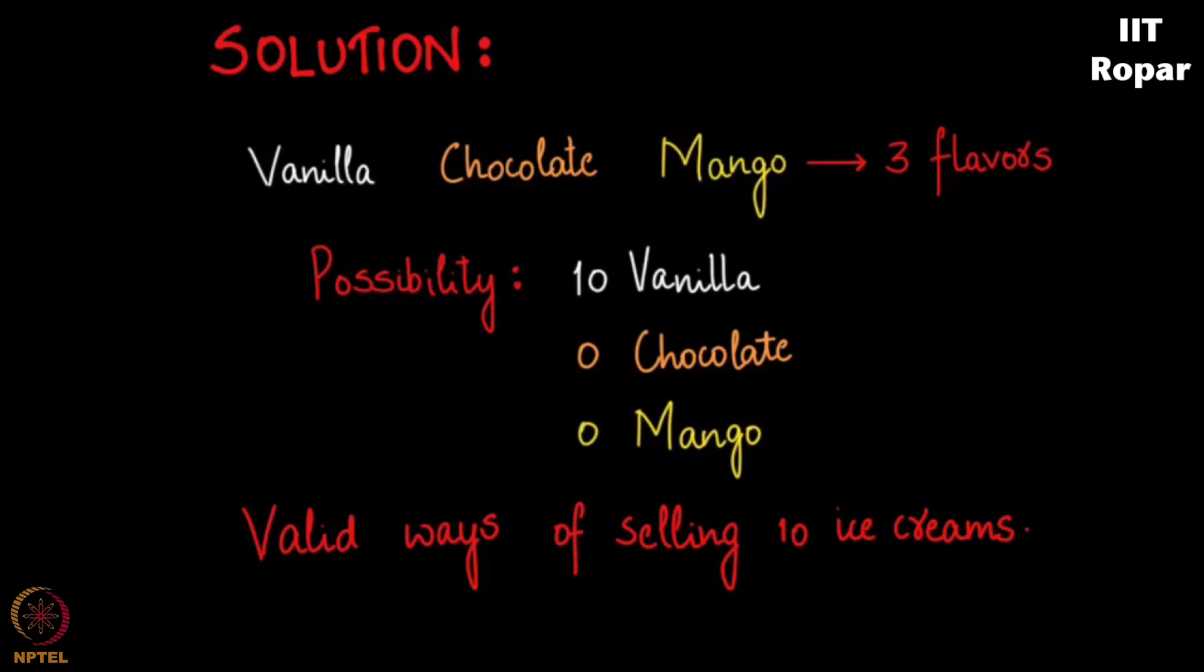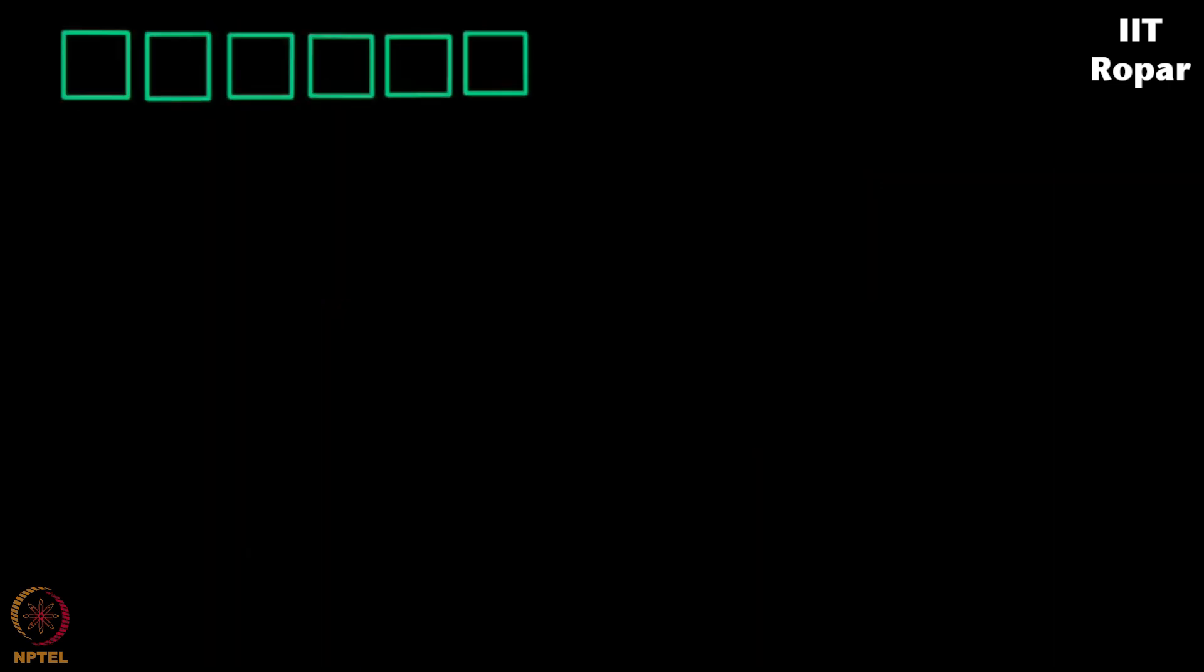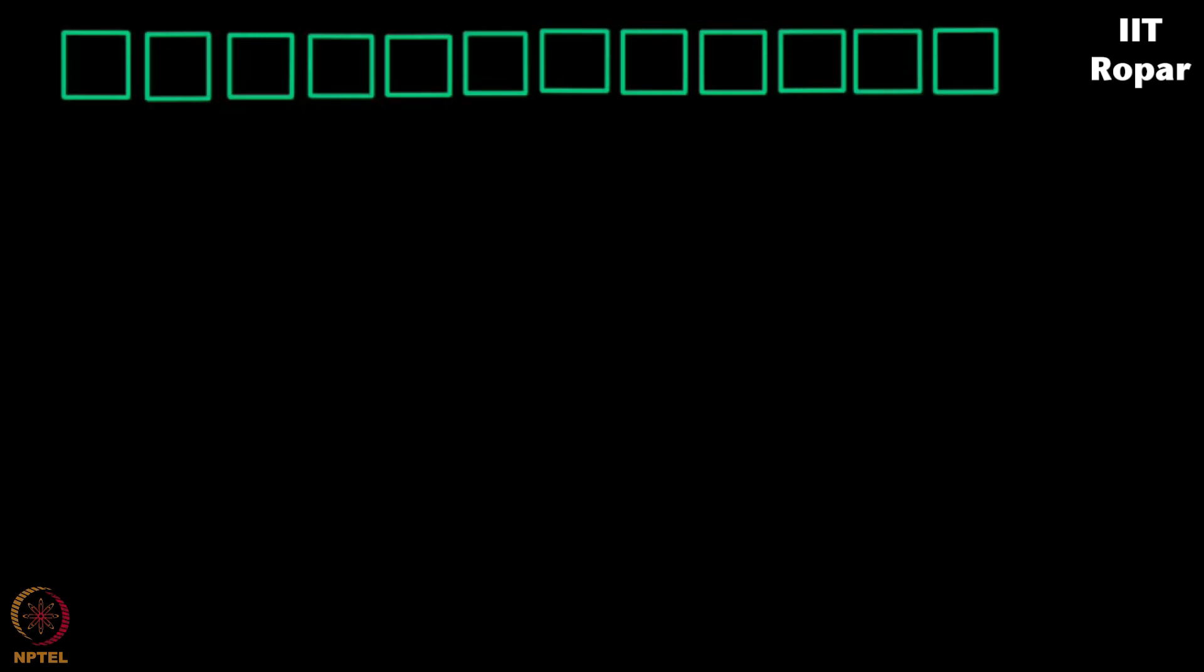Now what I will do is I will visualize this very thing in a particular way that makes my counting easy. What do I do? I will take 1, 2, 3, 4, 5, 6, 7, 8, 9, 10, 11, 12 slots and two sticks.